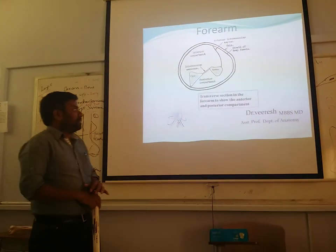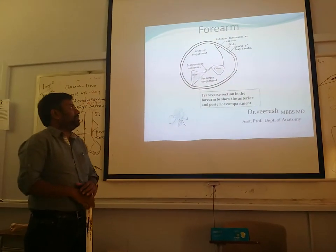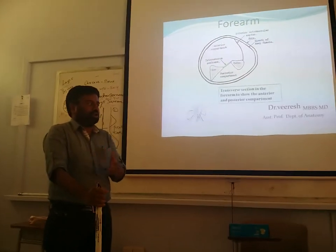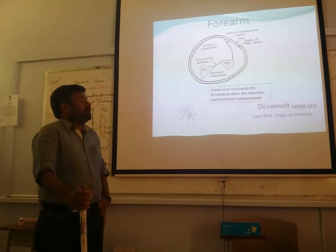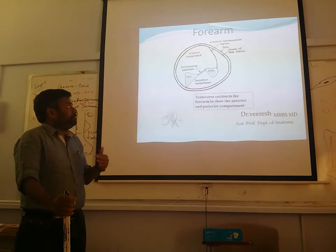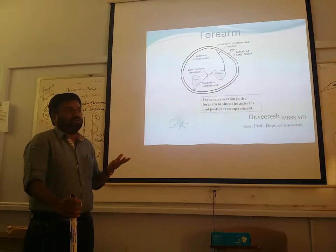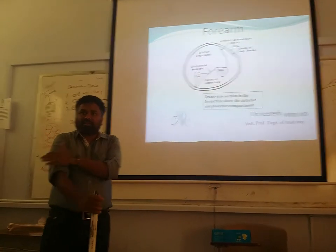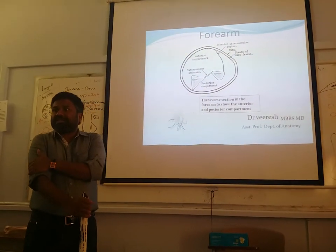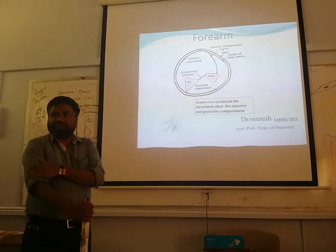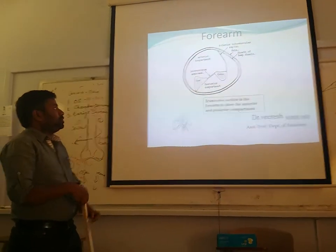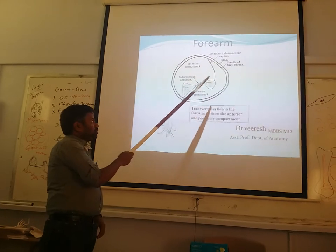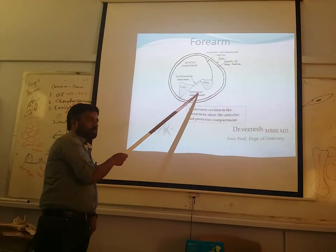Let us move on to the further part of the upper limb. There is a forearm that is between the elbow and the wrist joint. Like the arm, it has been divided into an anterior or flexor compartment and a posterior or extensor compartment by the deep fascia. Similarly, the forearm is also divided into anterior flexor and posterior extensor compartments.